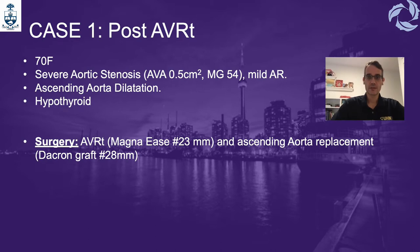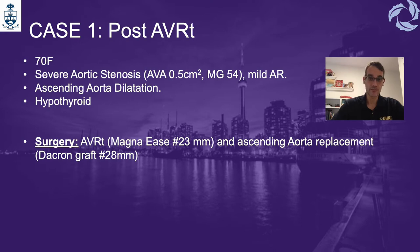The first case is a 70-year-old female coming for aortic valve replacement due to severe aortic stenosis, with ascending aorta repair due to ascending aorta dilatation. This lady had only one comorbidity: hypothyroidism. The bioprosthetic valve inserted by the surgeon was a Magna Ease 23 millimeters with an ascending aorta 28 millimeters Dacron graft.